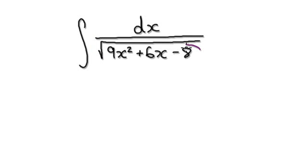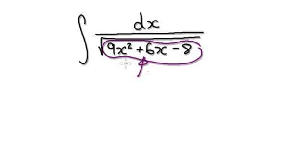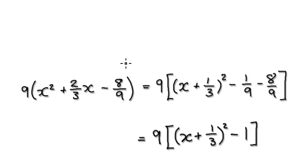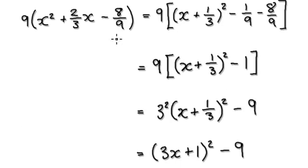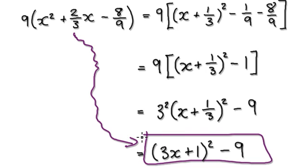To do this, you should complete the square on this bit here. Completing the square on this bit here, factor out the 9. Factor out the 9, it would then give you this. Completing the square, factor out the 9, and then it would give you this. Then use whichever method you want — complete the square — it would then give you this.